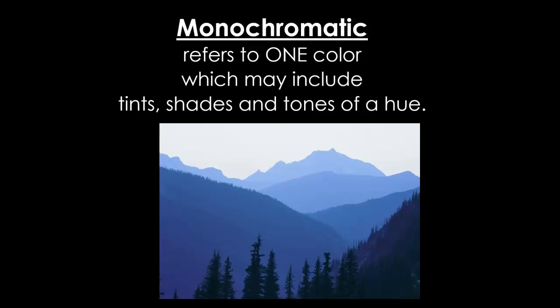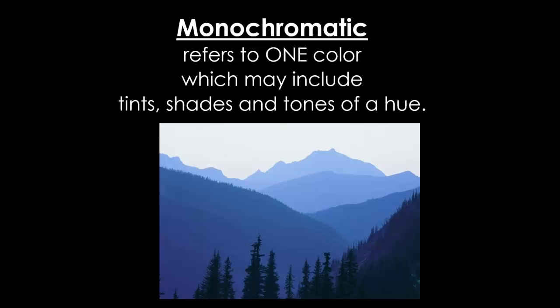Monochromatic refers to one color. One color can be a bright color, a dull color, a light color, or a dark color. Here are all the tints, shades, and tones of a single hue.